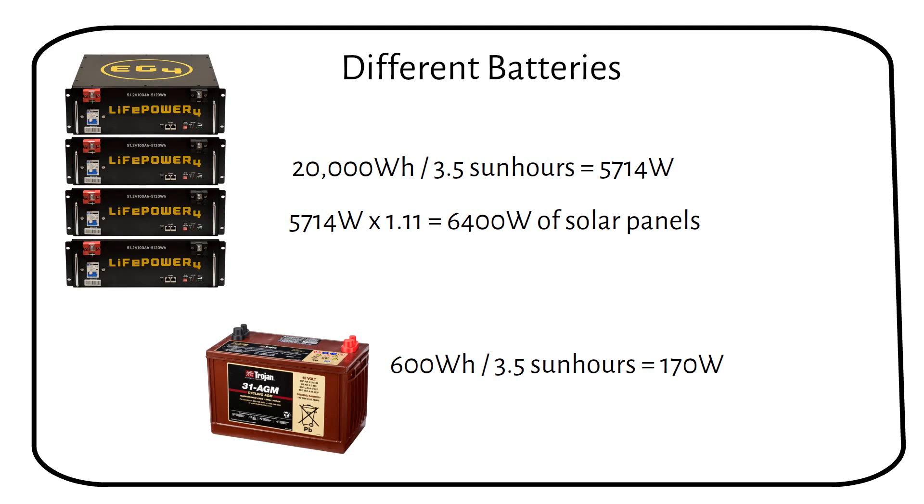Considering the charging efficiency of a lead acid battery, which is 90%, and the charge controller efficiency of 95%, this becomes 85%, which makes a 1.18 efficiency factor. 170 watts times the efficiency factor equals 200 watts of solar panels.